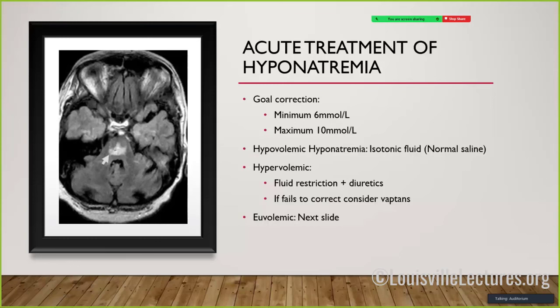For treatment: hypovolemic hyponatremia can be treated with normal saline because they're volume-depleted - that's why they're releasing ADH. Give normal saline, fix the total body sodium deficit, they stop releasing ADH, and sodium corrects. These patients can correct very rapidly, which itself is a problem. Many experts recommend giving desmopressin before starting normal saline to slow the correction, depending on acuity. Hypervolemic hyponatremia should not receive sodium - they already have excess total body sodium - so focus on diuresis and fluid restriction, and consider a vaptan (ADH antagonist) if that fails.